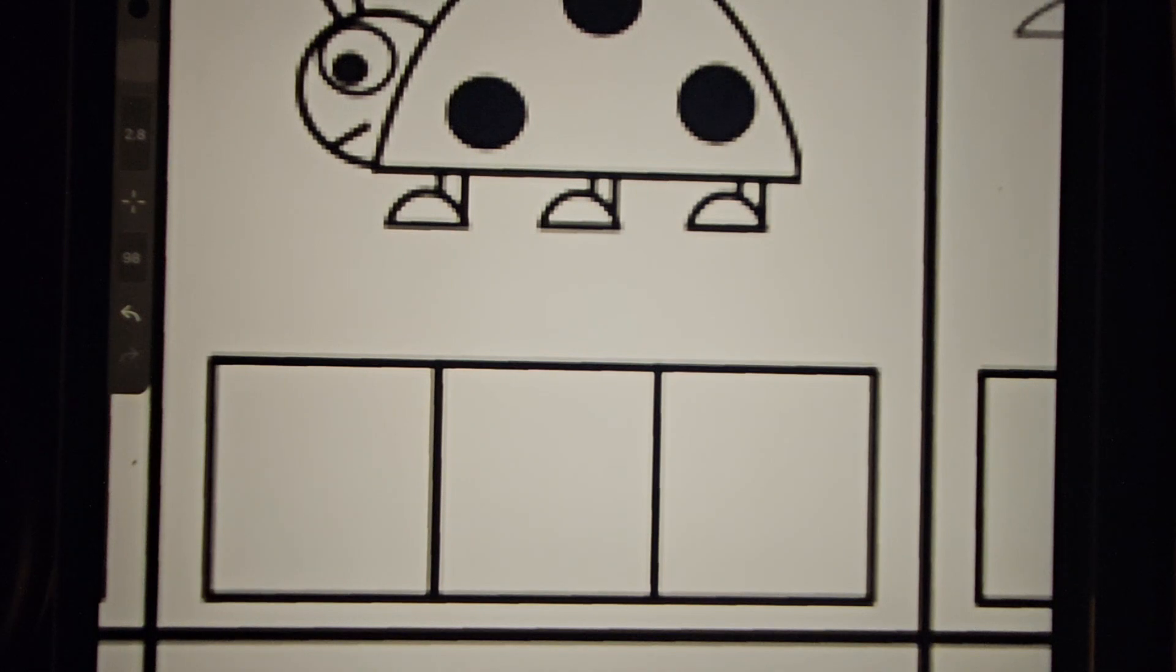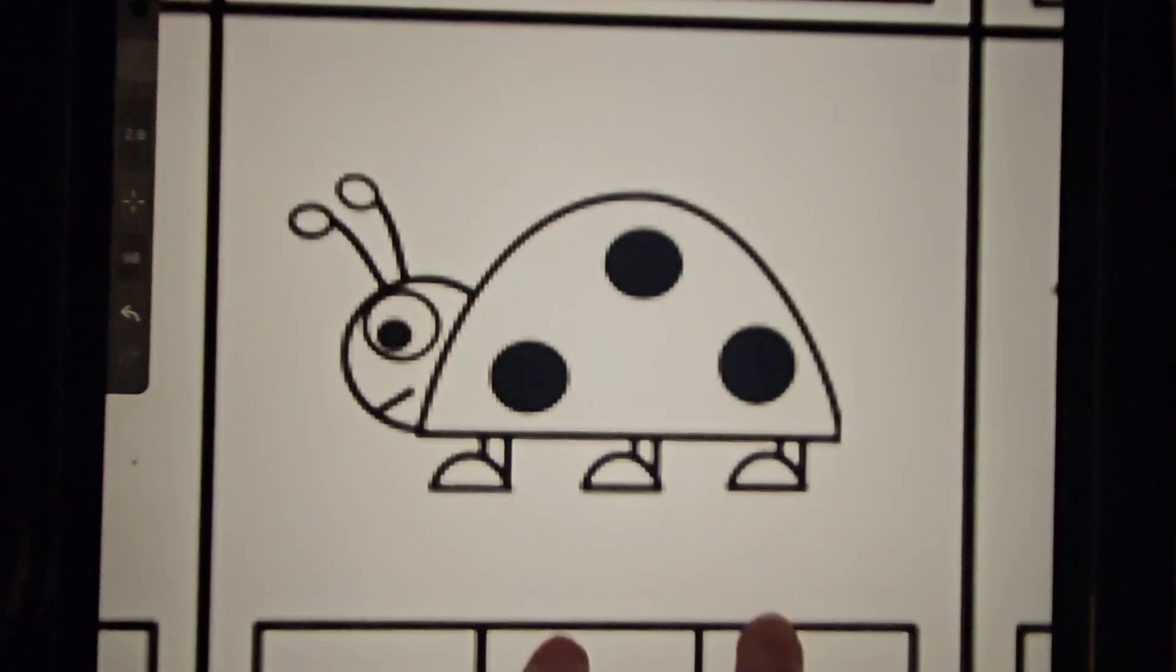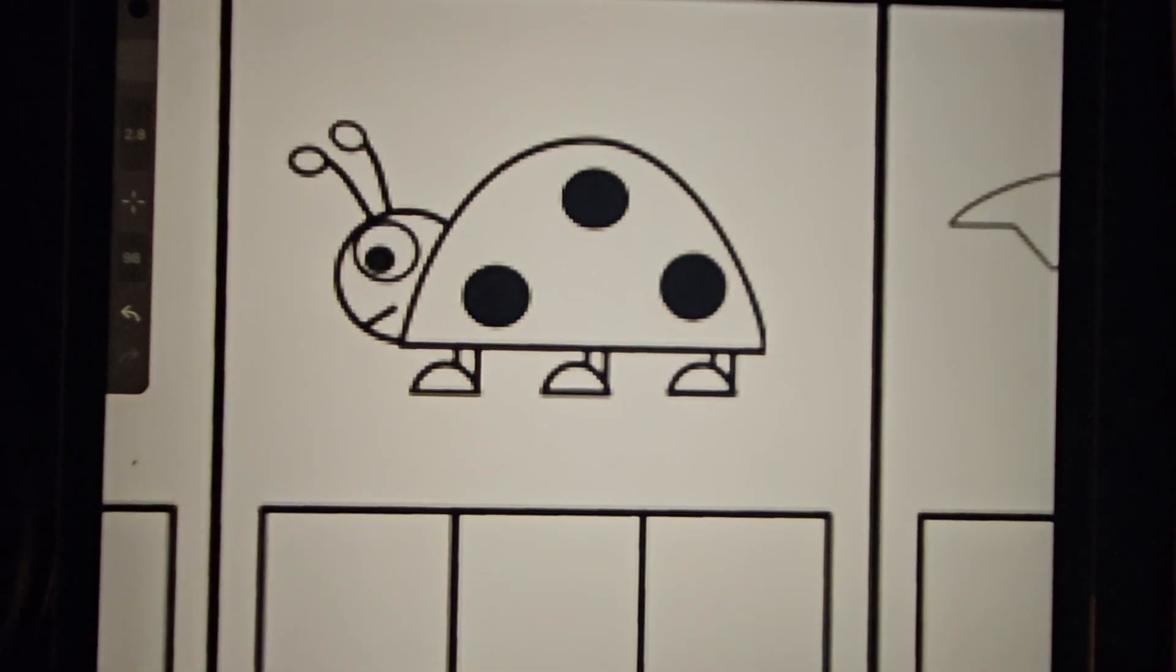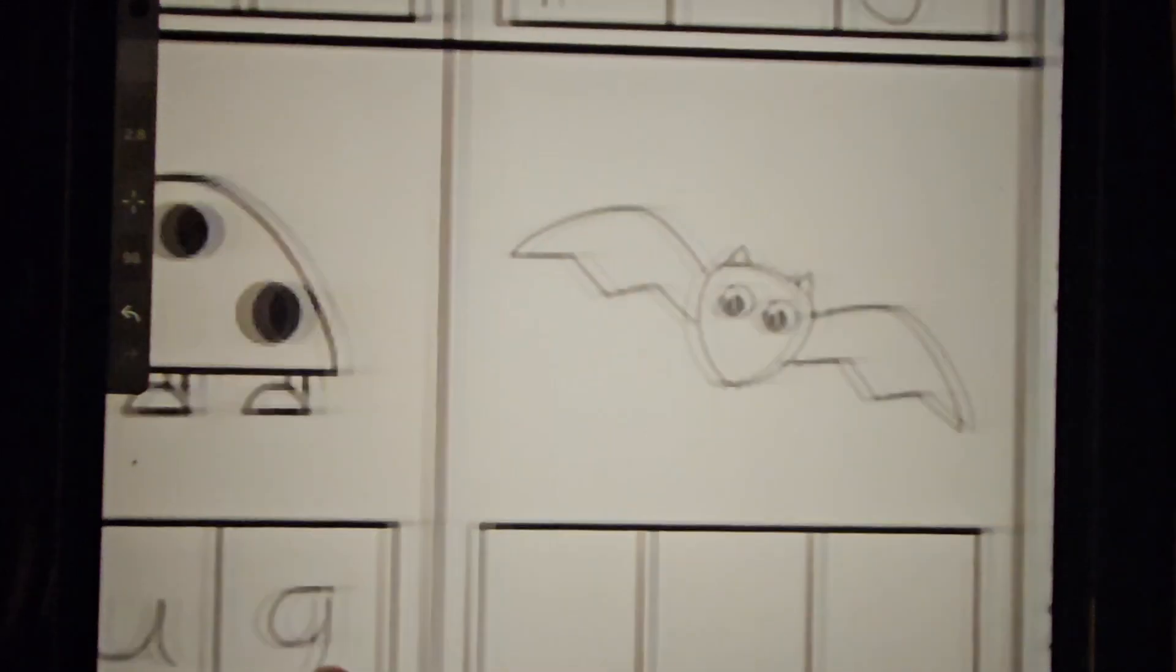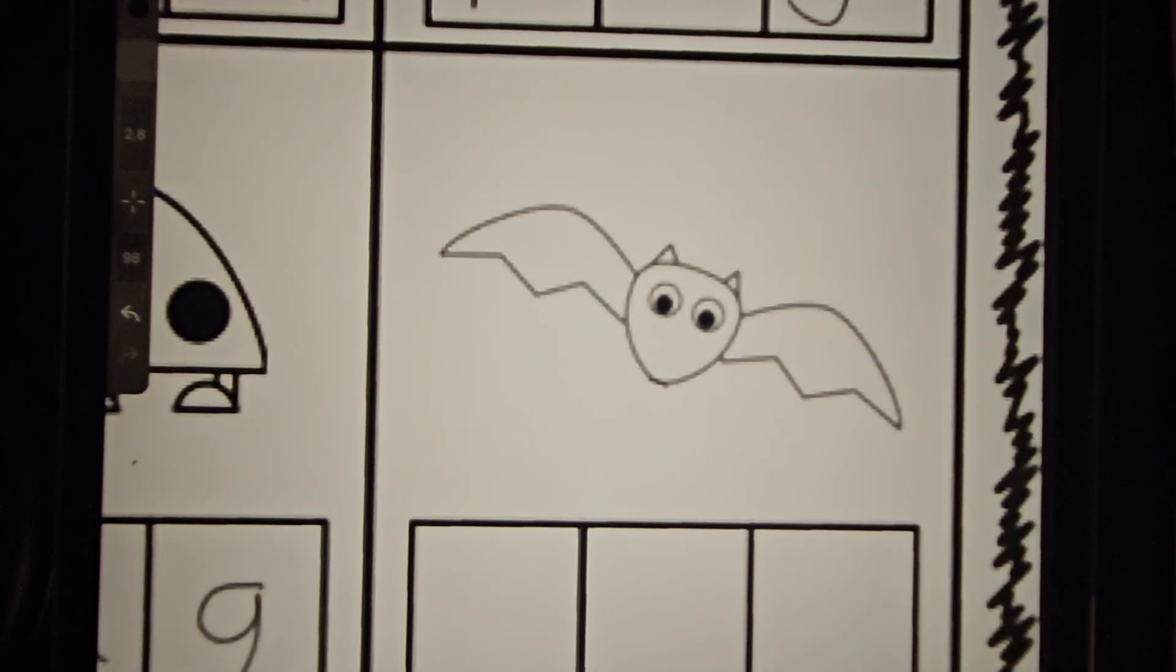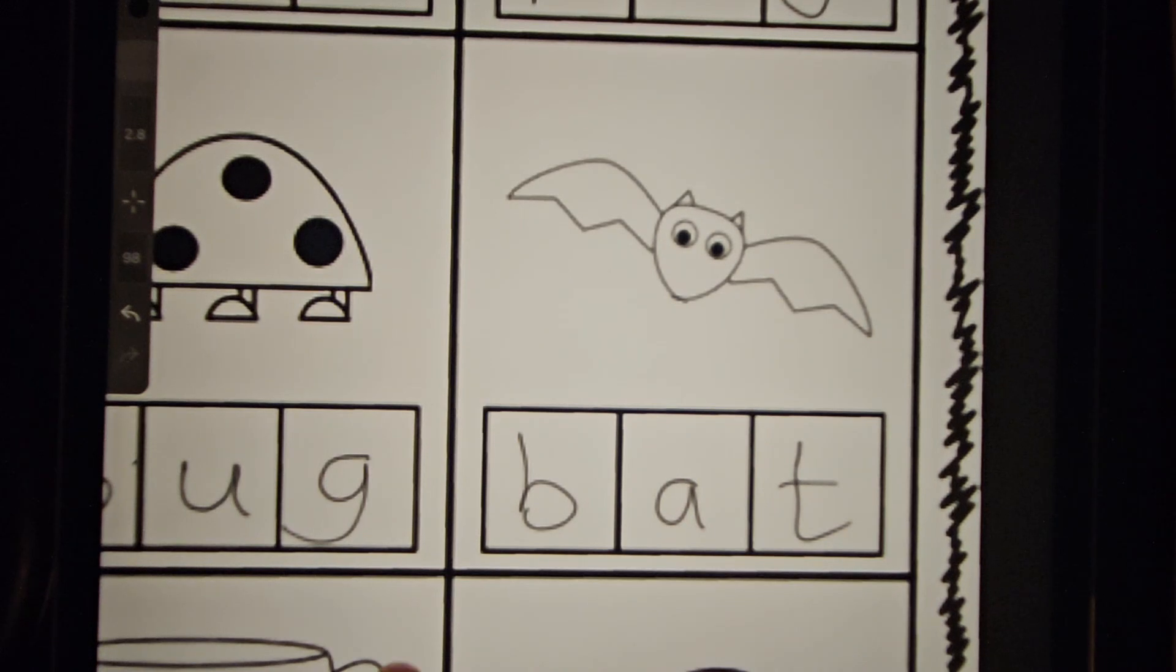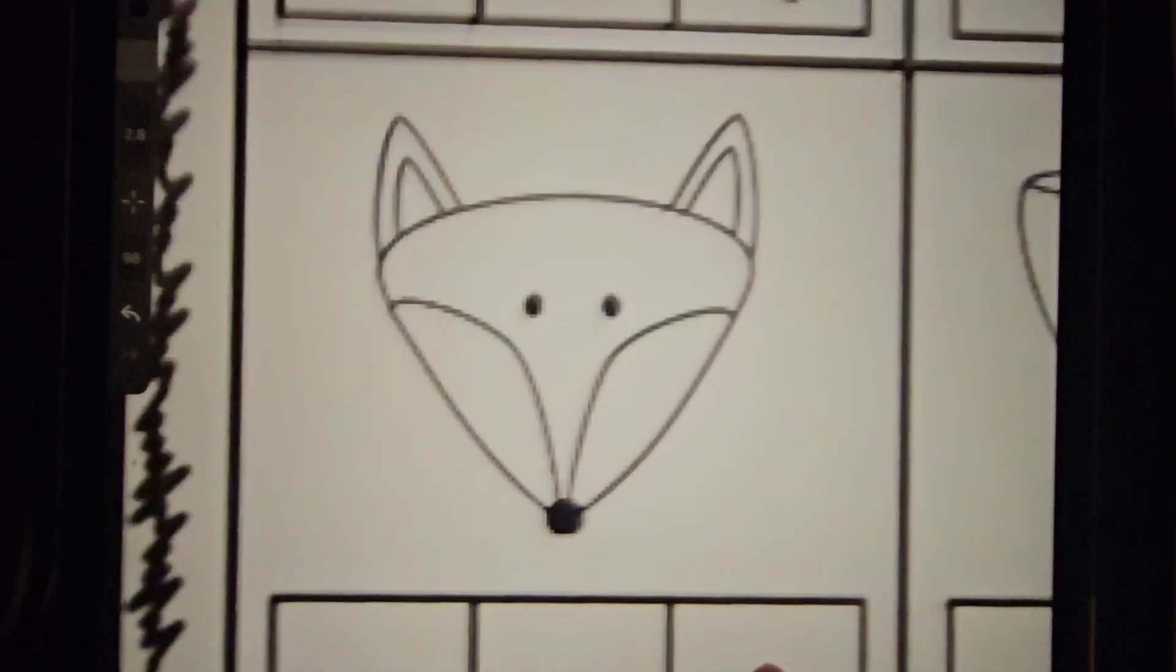Oh, this is a ladybug. That doesn't fit. No, of course it doesn't fit. We can only put like three letters. Oh, I think you're right, it's bug. B, U, G. Great. Oh, this is a bat. A bat. We're doing this pretty quick as well. We're such a good team. A fox, yes, I think you're right. F, O, X.